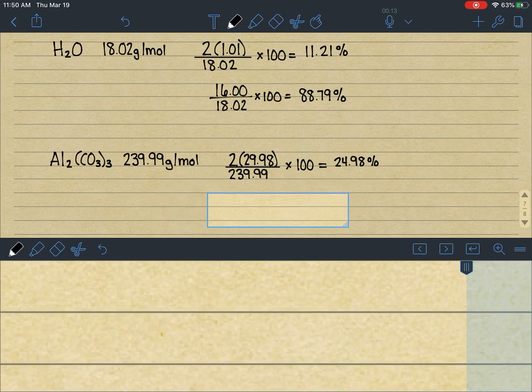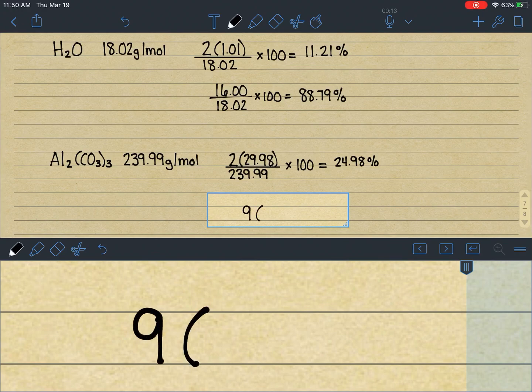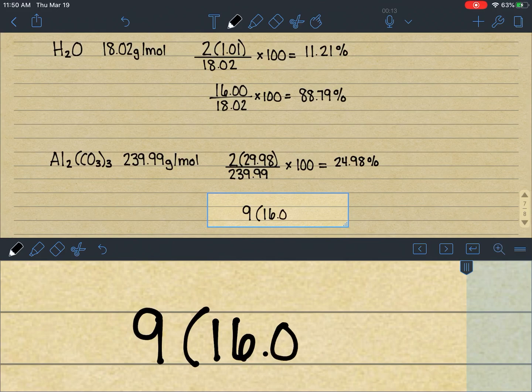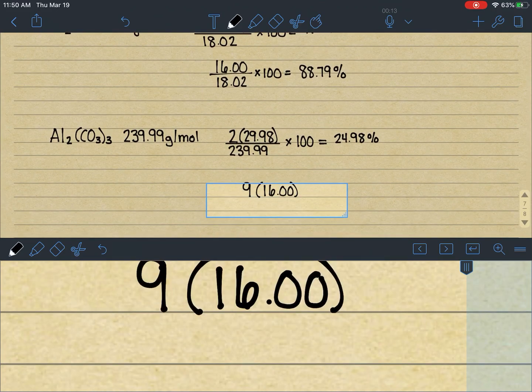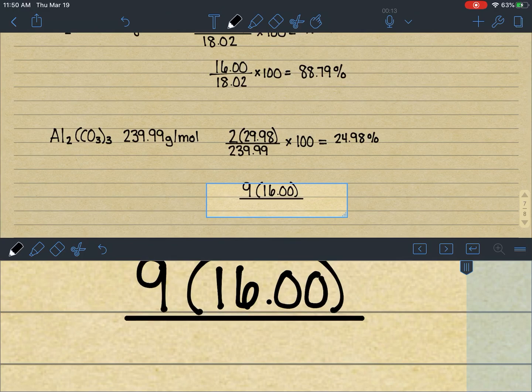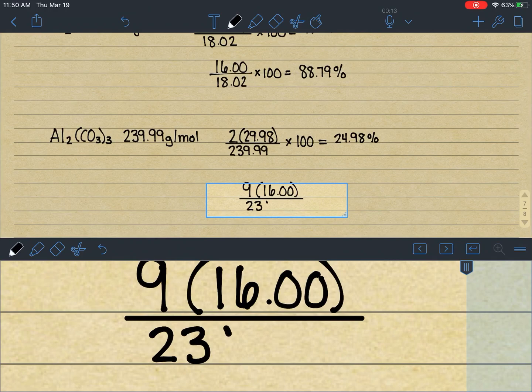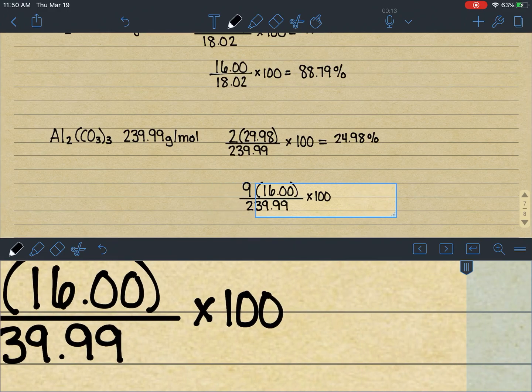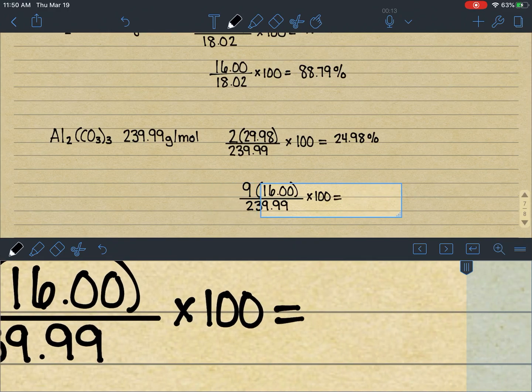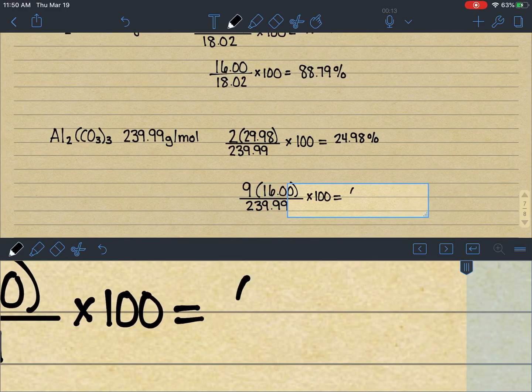All right, so that was aluminum. Let's take a look at oxygen. Again, on this aluminum carbonate, we have nine oxygens times 16.00 grams per mole for every oxygen that we have in that mole of compound. And then we're going to divide that by 239.99 times 100. Bear with me while I plug that in. And we get 60.00%.